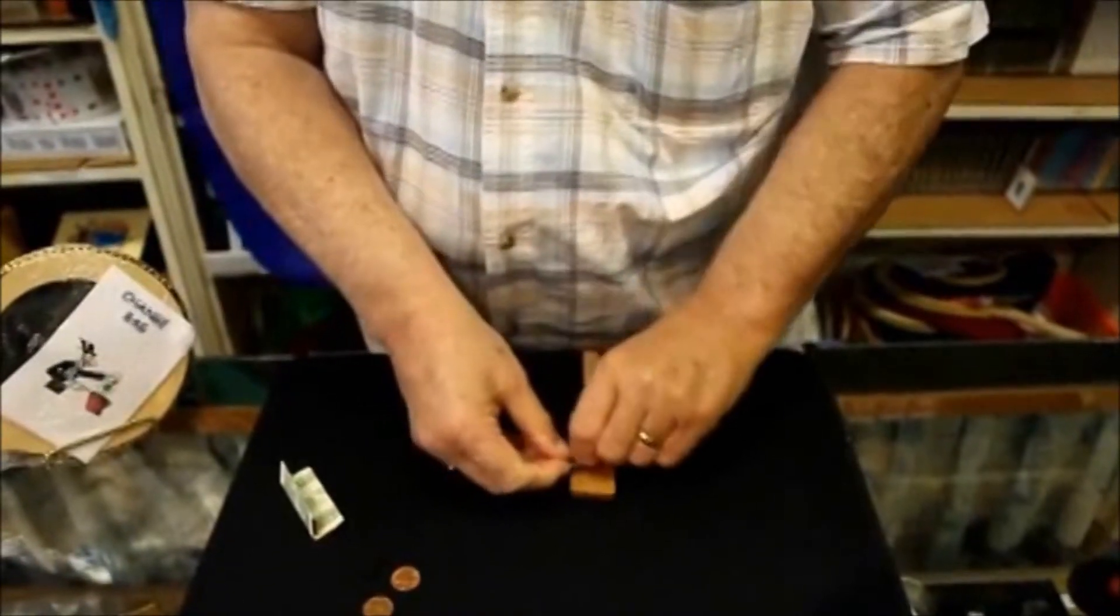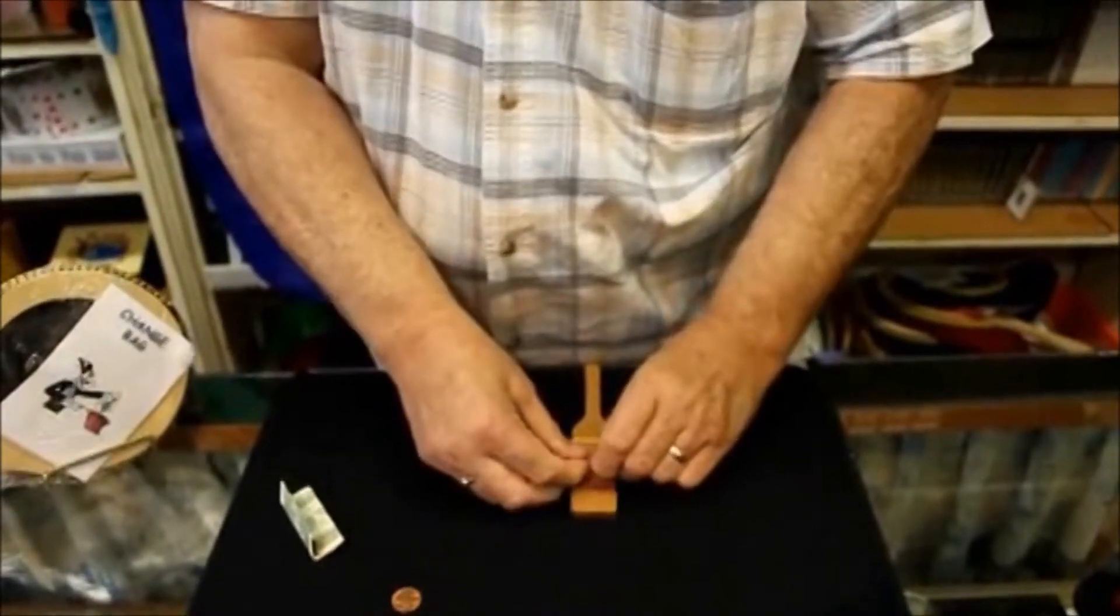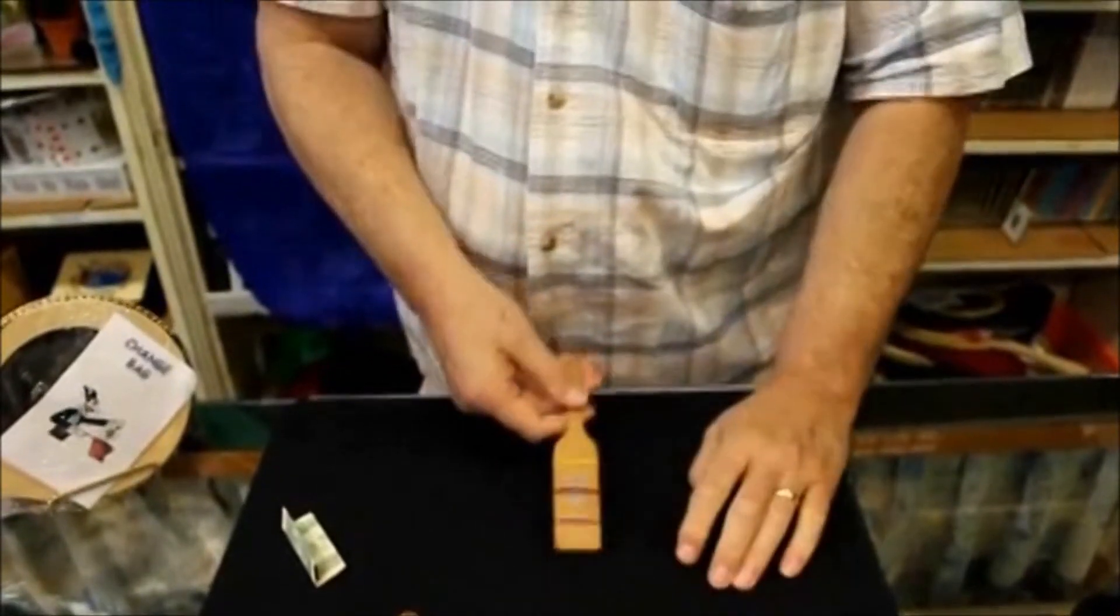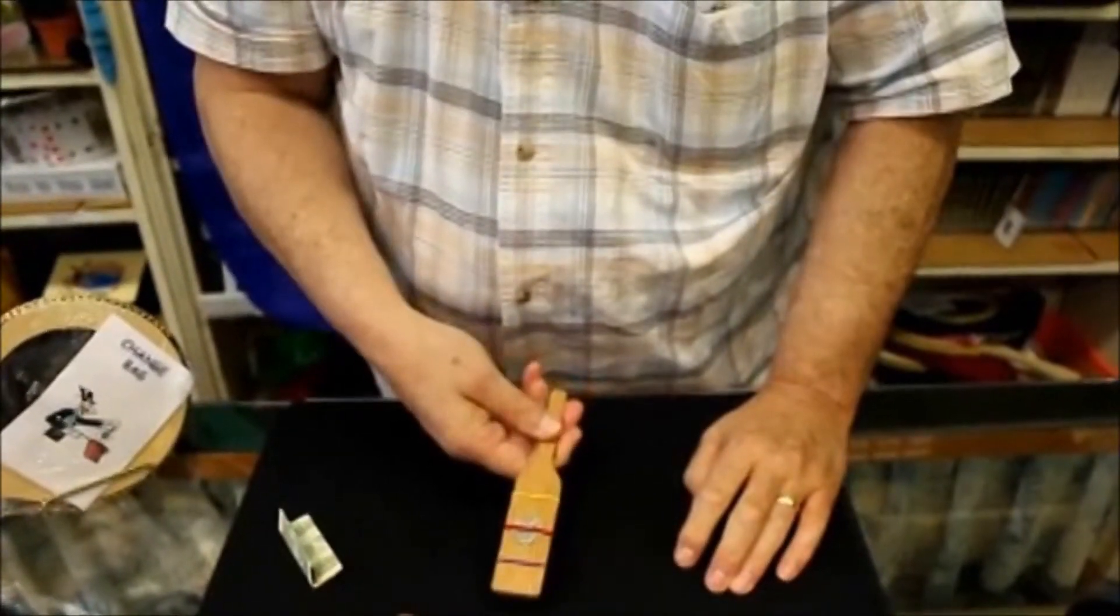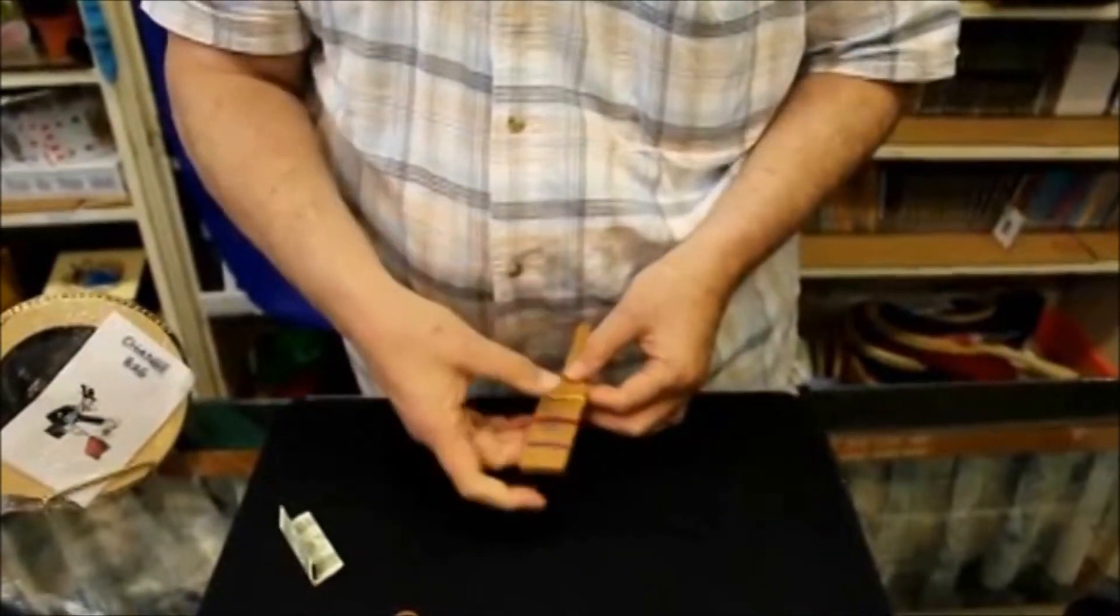Put a nickel under the second one. Tap it five times. You get two nickels.